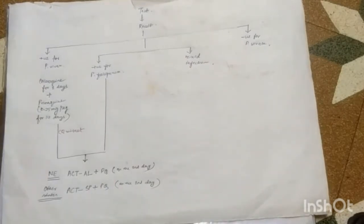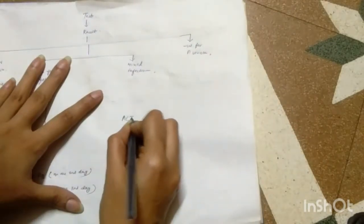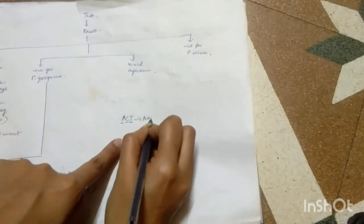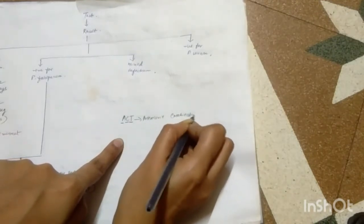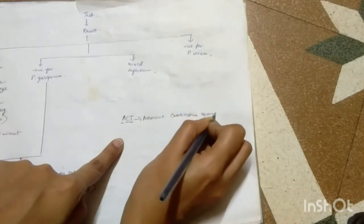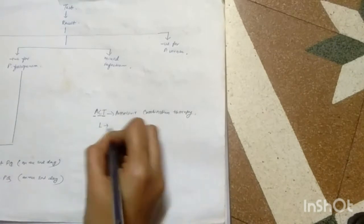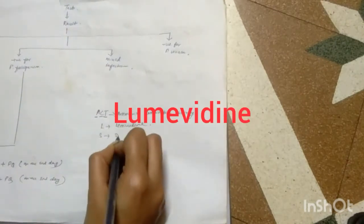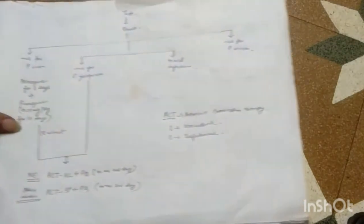Now what does ACTAL and ACTSP mean? ACT stands for artemisinin combination therapy. AL here stands for lumefantrine, and SP here stands for sulfadoxine-pyrimethamine.